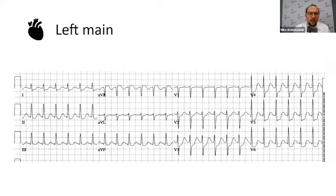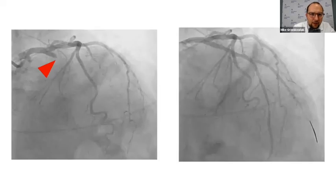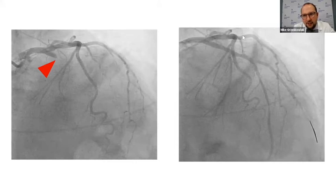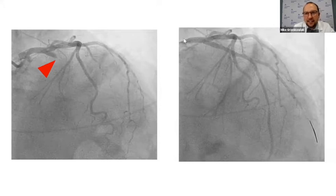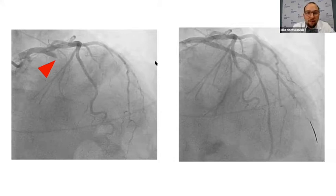This is important because it's really easily missed since we almost never focus on AVR. The left main coronary artery — if we look at this picture, you have the left main coronary artery here, the left anterior descending, and the left circumflex. When we say a left main STEMI, that means there's occlusion right here in the left main, basically cutting off blood flow to the entire LAD and the entire circumflex — cutting off blood flow to 60%, if not more, of the heart.